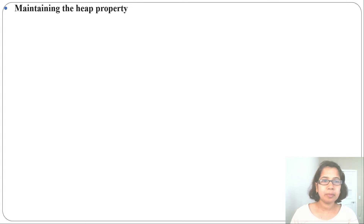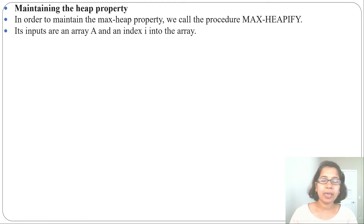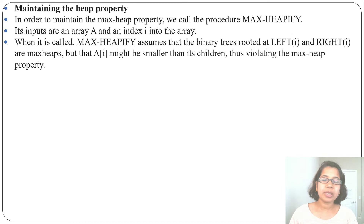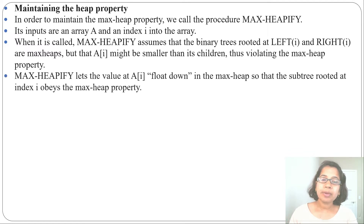Let's discuss maintaining the heap property. Heap property means parental dominance property. For maintaining parental dominance property we need to call the max heapify procedure. The input is an array and index i. It assumes that the left subtree and right subtree at that node are already in max heap. If the node is smaller than its children, it violates the max heap property, and max heapify lets the value at A[i] float down so the subtree rooted at index i satisfies the max heap property.